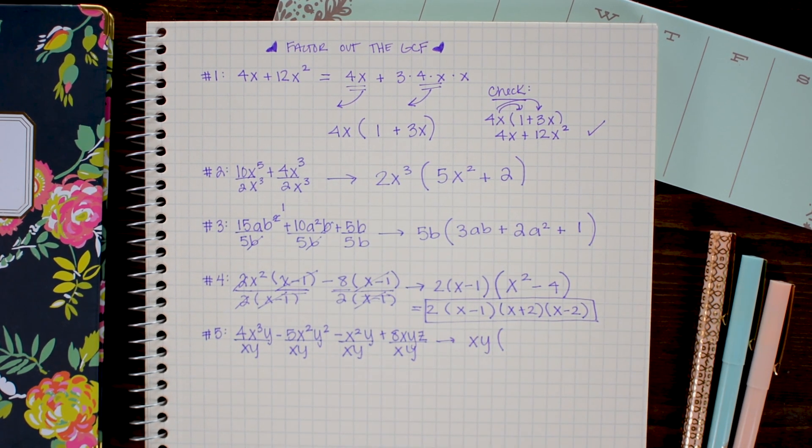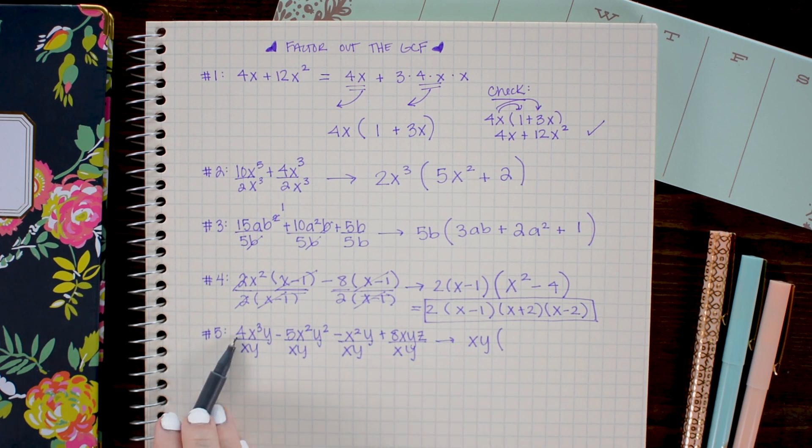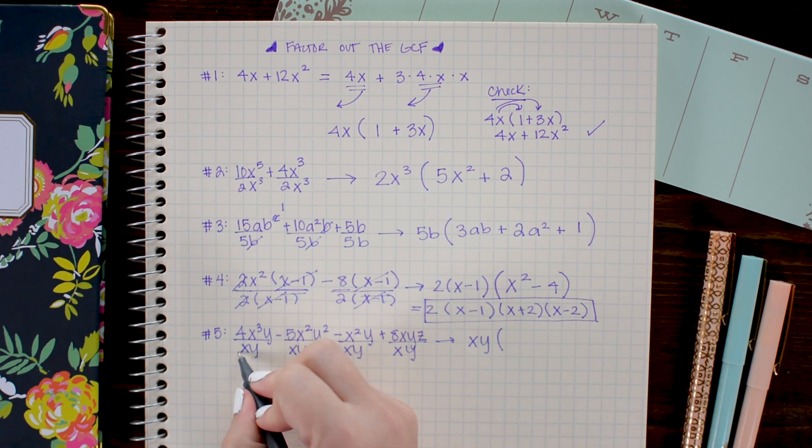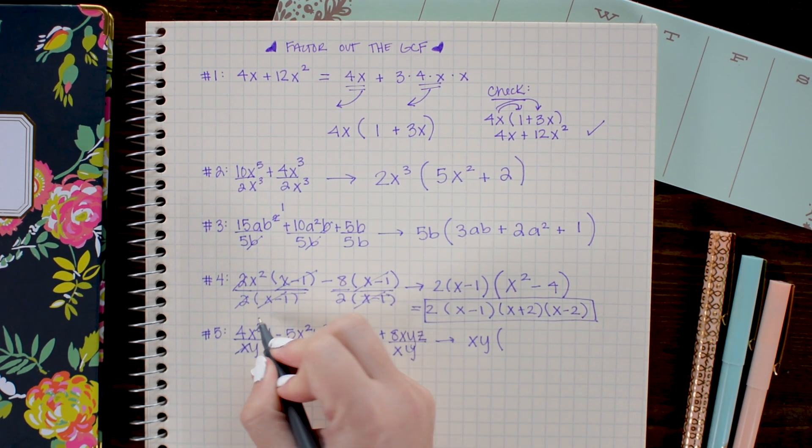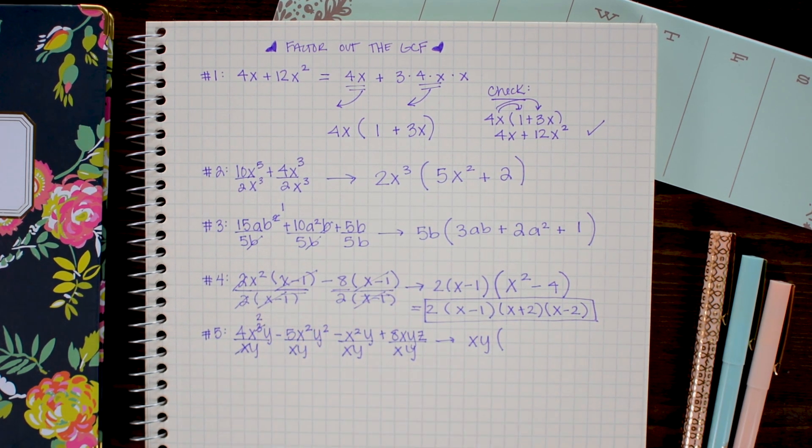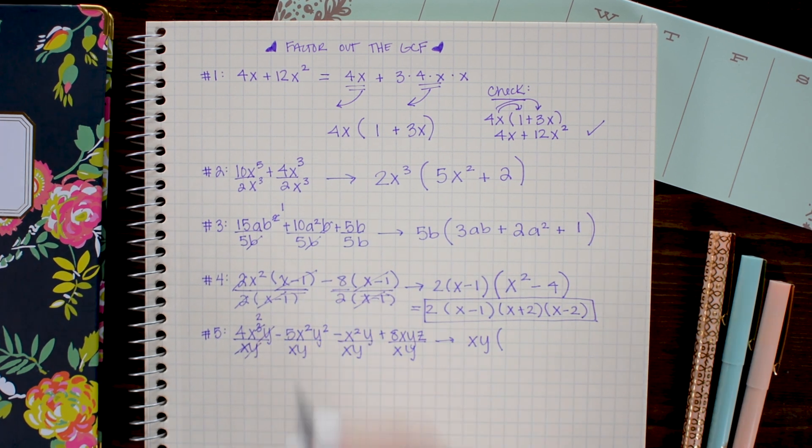And then whatever I divide is going to go inside parentheses. So here I have 4x cubed y divided by xy. I can cancel out one of the x's with 1 from the numerator. Leaving x squared. And the y's cancel out. So here I have 4x squared.